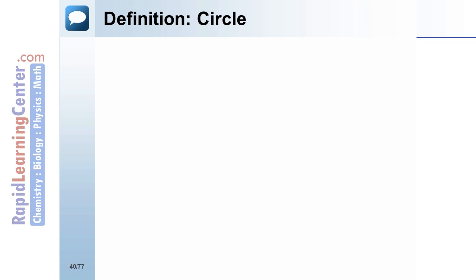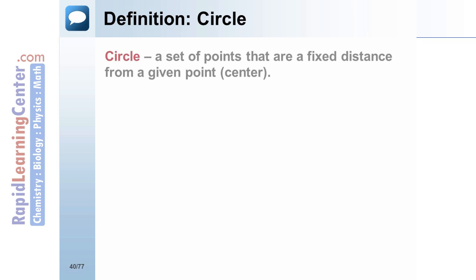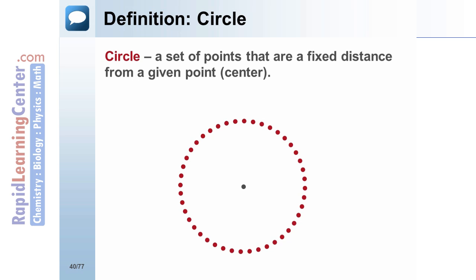Definition — circle: a circle is a set of points that are a fixed distance from a given point called the center. The center is used to name a circle; for example, this is circle N. Congruent circles have congruent radii.